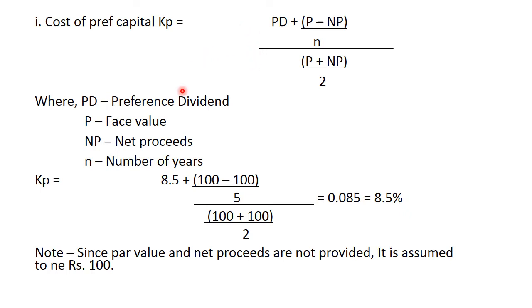Learn this formula. PD is preference dividend, P is face value, NP is net proceed and N is the number of years. We know the rate of dividend is 8.5%, par value face value 100, 100 same. So it becomes 0, this value becomes 0. 100 plus 100 upon 2 becomes 200 upon 2 is again 100. So it is 8.5 upon 100 which means it is 8.5%.